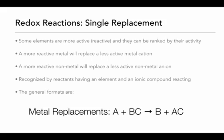The general formats are: with metal replacement, we have a metal, here represented by A, reacting with ionic compound BC, where B represents the metal ion in the compound. On the product side, we'll see that B has been replaced and is now by itself, and metal A is part of the ionic compound on the product side.